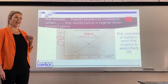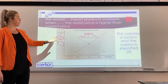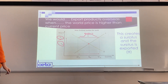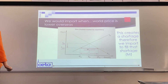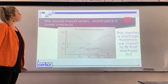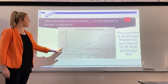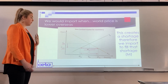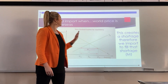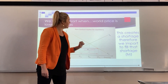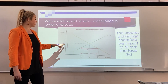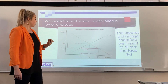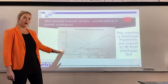That is how we tell if a country is an exporter. We will now look at if the country is an importer. We import when the world price is lower than the equilibrium price. We have our supply curve, demand curve, equilibrium price, and equilibrium quantity for New Zealand.